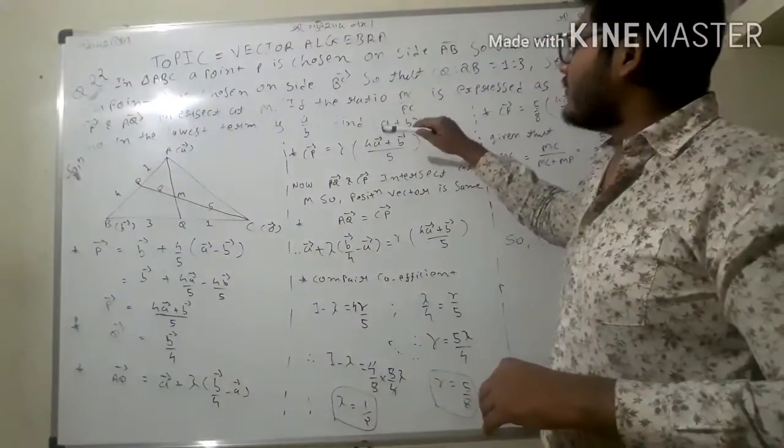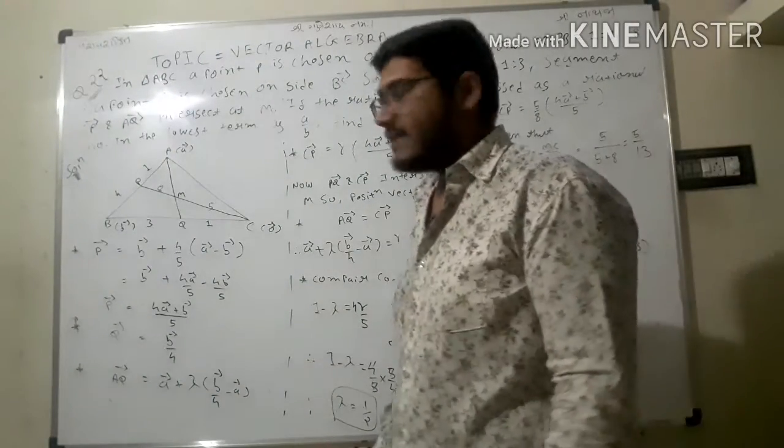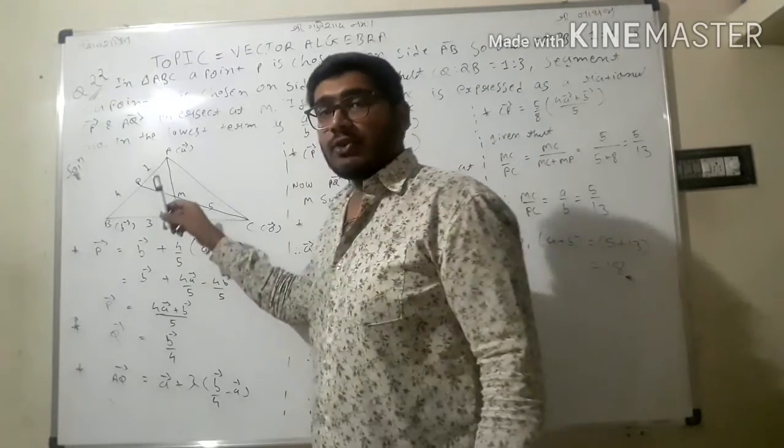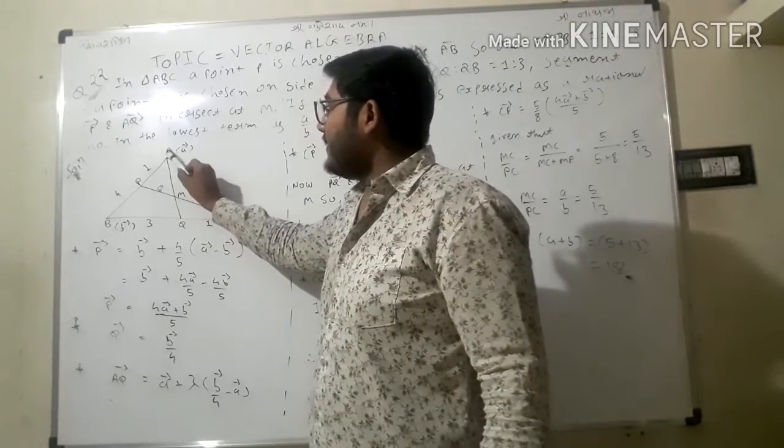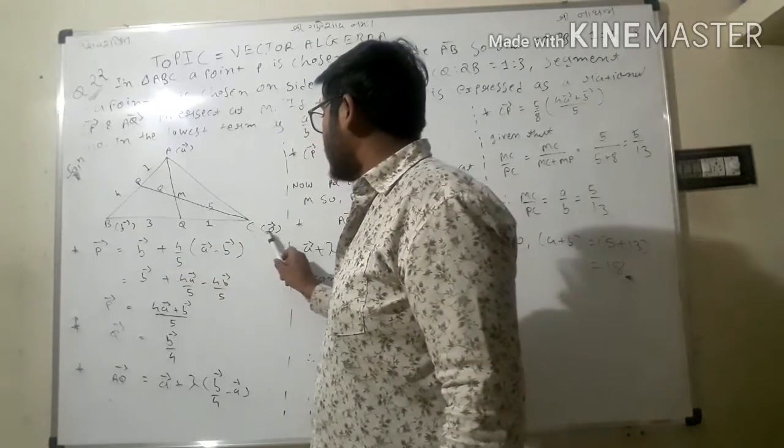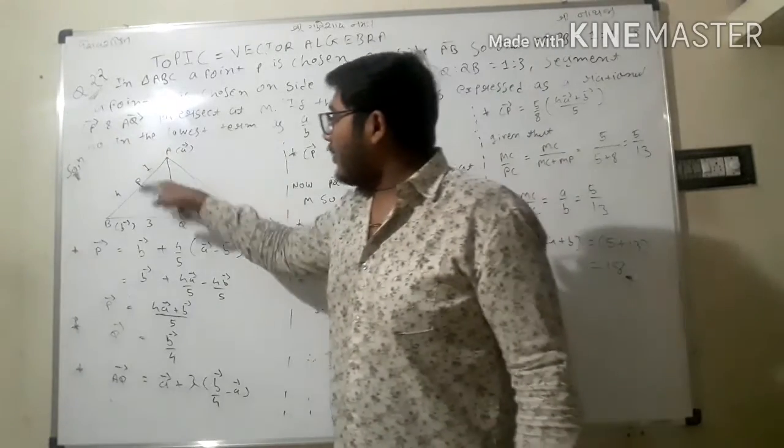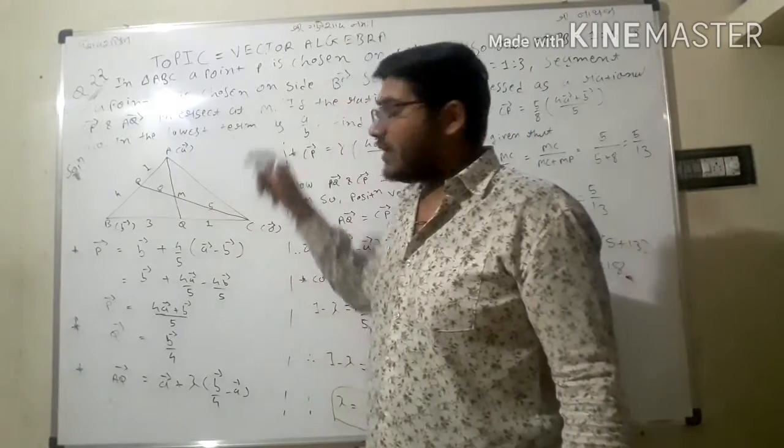First of all, I am taking A equals a vector, B equals b vector, and C equals zero vector as an initial point.